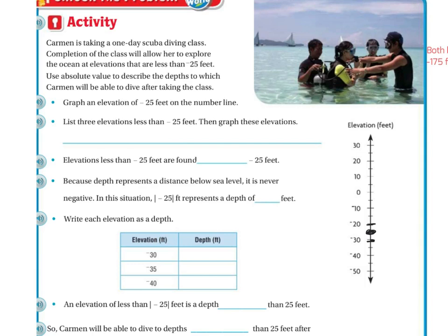So list three elevations less than negative 25 feet. Well, three elevations less than 25 feet, we could say negative 30, we could say negative 32, we could say negative 40, we could say negative 31. Anything below is going to be less than 25 feet.